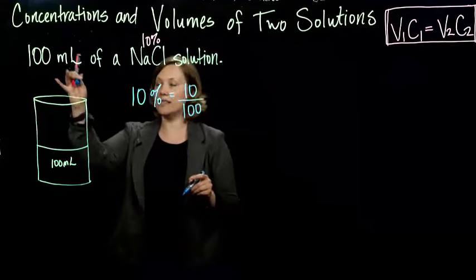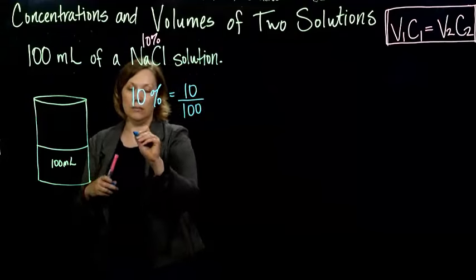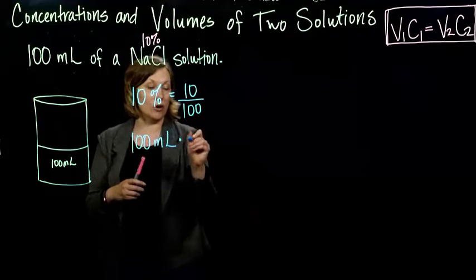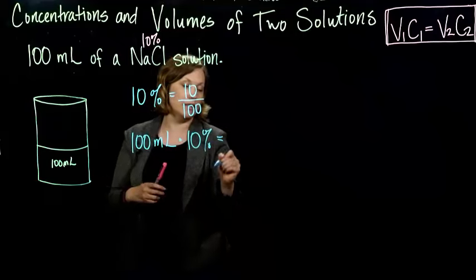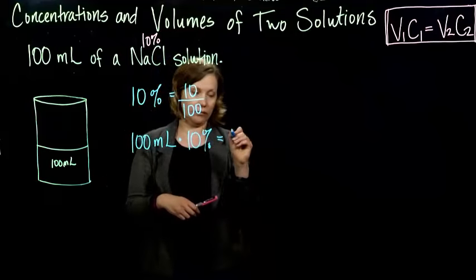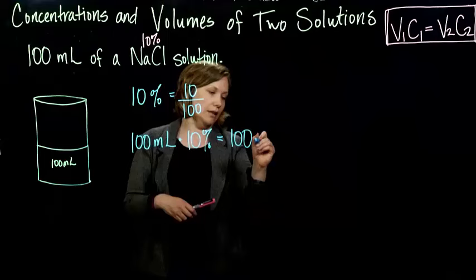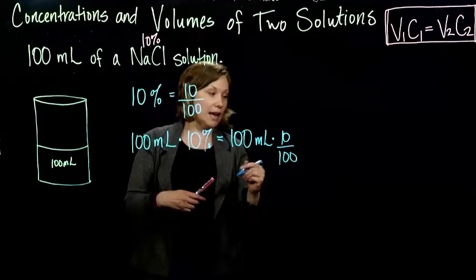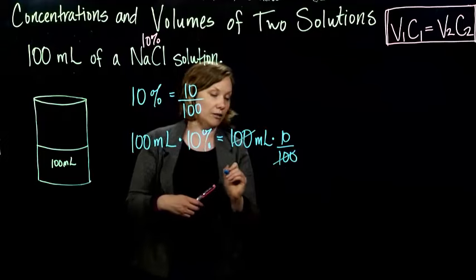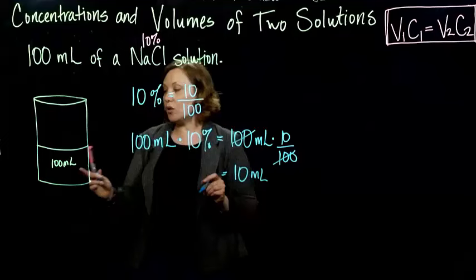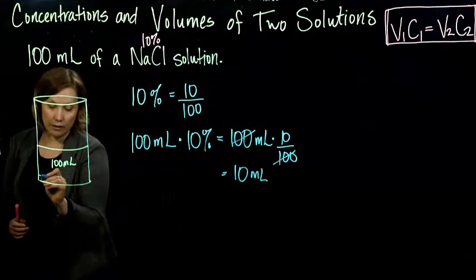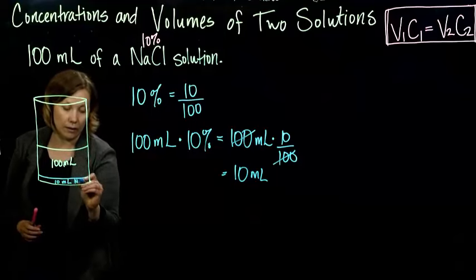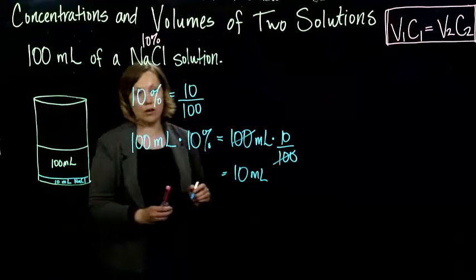So to find 10% of 100 milliliters, we would take 10% of means to multiply. 100 milliliters times 10% equals 100 milliliters times 10 per 100. And we reduce that fraction, right, the 100's cancel, and we end up with 10 milliliters. So of our 100 milliliters, just 10 milliliters of that solution is sodium chloride.